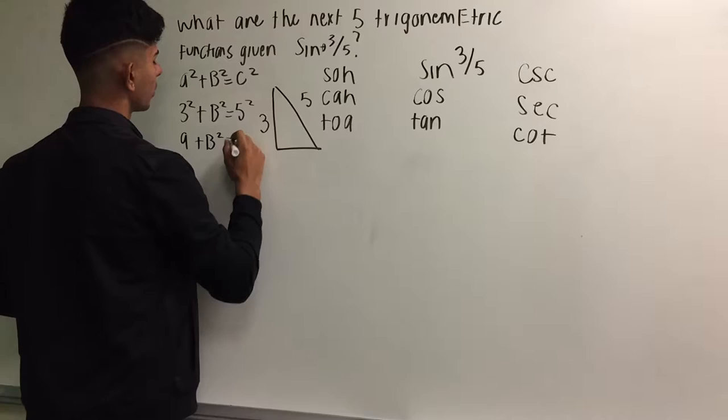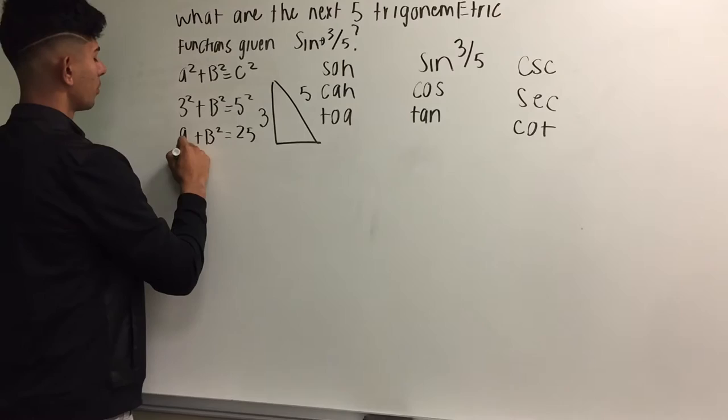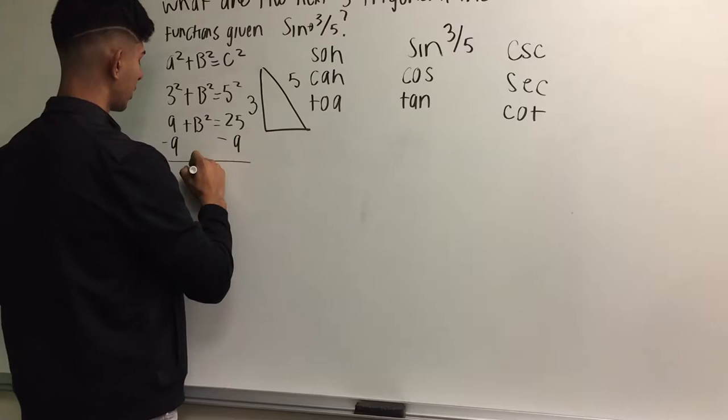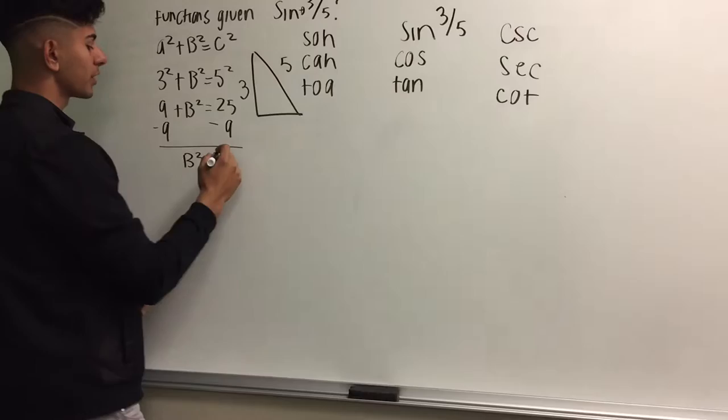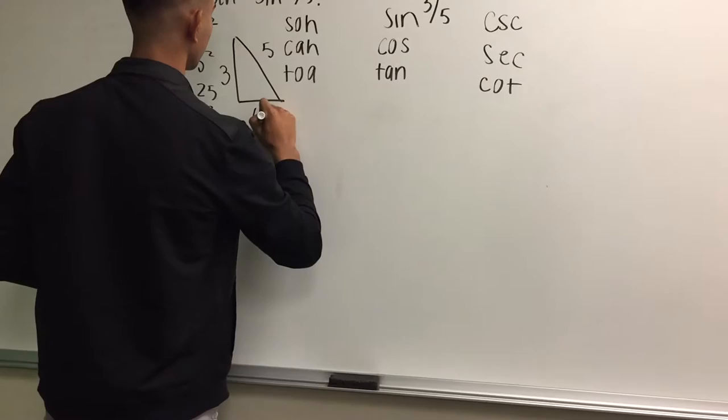Then we solve 3 squared equals 9 plus B squared equals 5 squared equals 25. After we have gone to this, we subtract 9 on both sides. We isolate the B squared. B squared equals 25 minus 9 equals 16. And now since it's B squared equals 16, the square root of 16 equals 4. So that's our missing side.